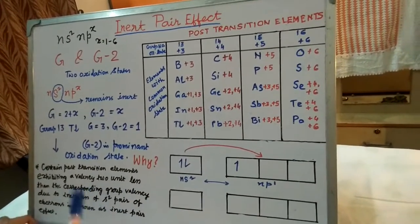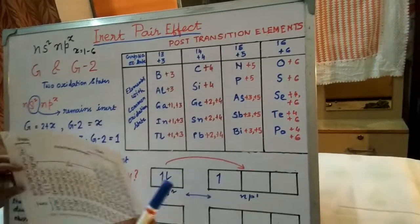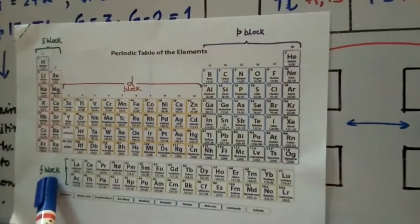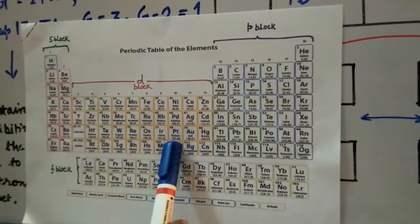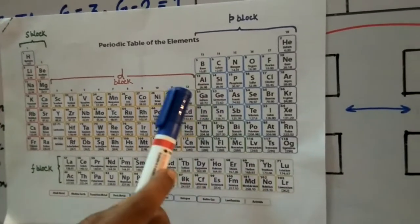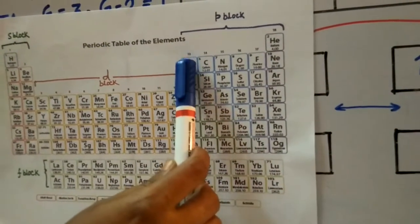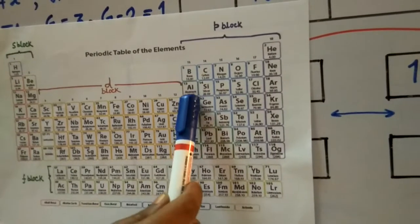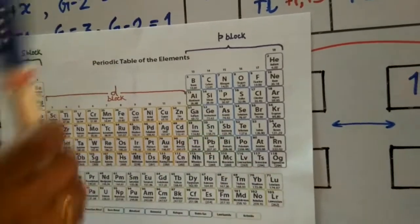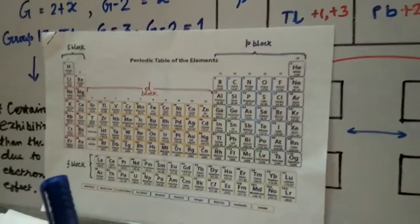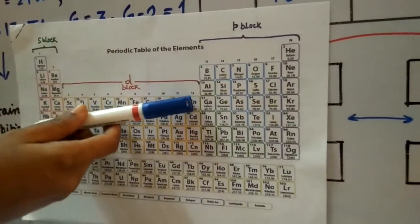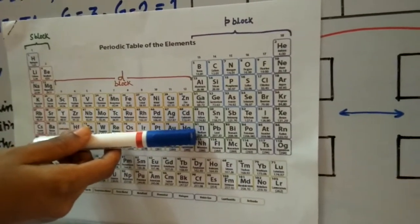First, let me tell you which elements show the inert pair effect. Looking at the periodic table, we have S block, P block, D block, and F block elements. After the D block elements, in the P block, there are some elements called post-transitional elements belonging to groups 13, 14, 15, and 16 — specifically the heavier elements as we go down the group. The inert pair effect is very prominent as we go down, for example from gallium to indium to thallium, where it is most prominent in thallium.